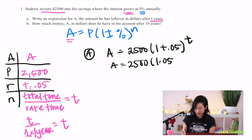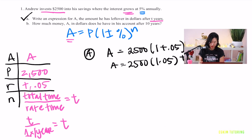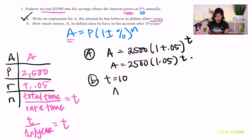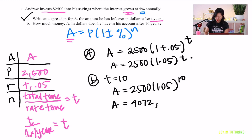Part b asks how much money Andrew has after 10 years. We plug t equals 10 into the equation: a equals 2500 times (1.05) to the power of 10. The answer is approximately $4,074.72.